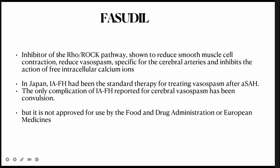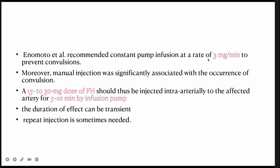Fasudil is a Rho-kinase pathway inhibitor used in Japan which reduces smooth muscle cell contraction and vasospasm specifically in cerebral arteries and inhibits intracellular calcium ion action. Intraventricular fasudil hydrochloride has been the standard therapy for vasospasm in Japan. Convulsion is a known side effect. It is not approved by the FDA or European medicines agencies. It is administered via constant pump infusion; if the infusion rate is less than 30 mg per minute, there is less chance of convulsion. Total of 15 to 30 mg should be injected intra-arterially with repeated doses as needed.